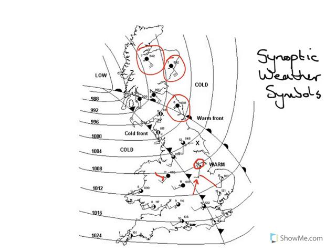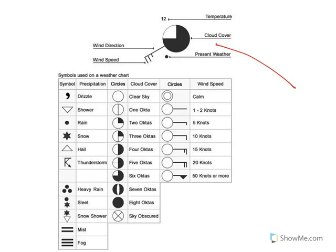By looking at one of these — for example, this one right here — I should be able to predict the weather in Edinburgh if I knew what the different parts of this synoptic weather symbol meant. The first thing we can work out is how much of the sky is covered with clouds. We do that by looking at how much of the circle is shaded in. If we think of it a bit like a pie chart, three-quarters of this circle is shaded in.